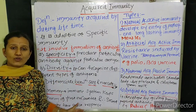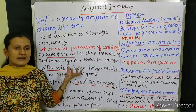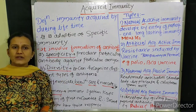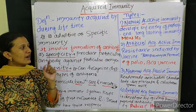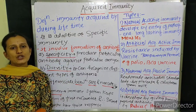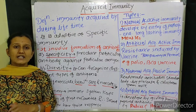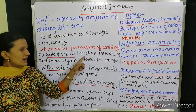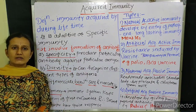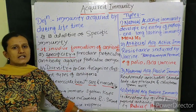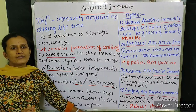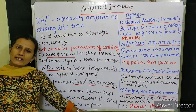Acquired immunity has the following particular properties. The first property is specificity — which is why acquired immunity is also called specific immunity. It produces particular antibodies against a particular antigen. When Salmonella typhi attacks the body, the body prepares specific antibodies against it. When Mycobacterium tuberculosis — which causes tuberculosis or TB — attacks, the body produces a different type of antibodies.